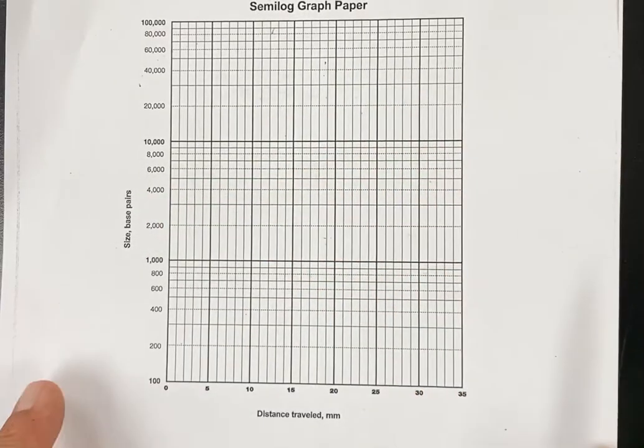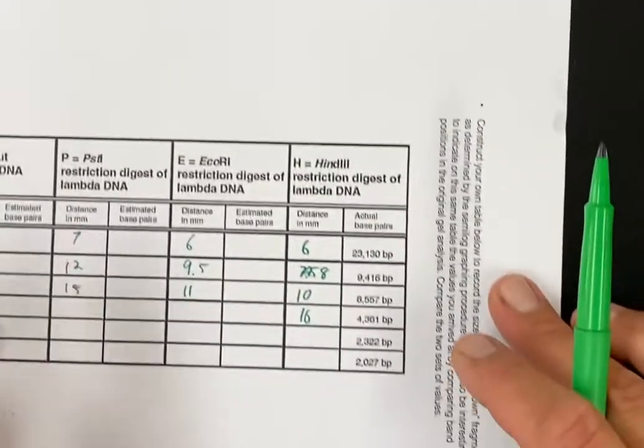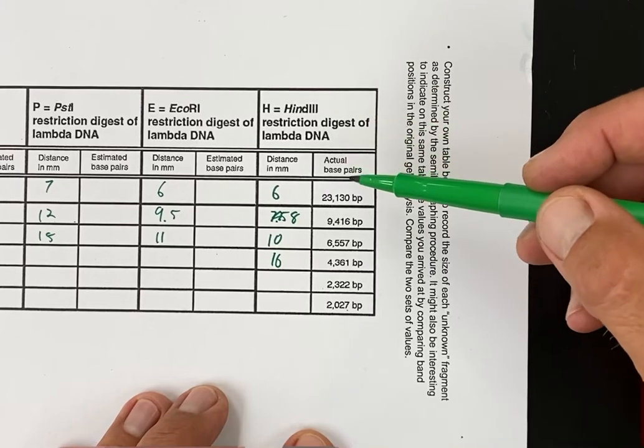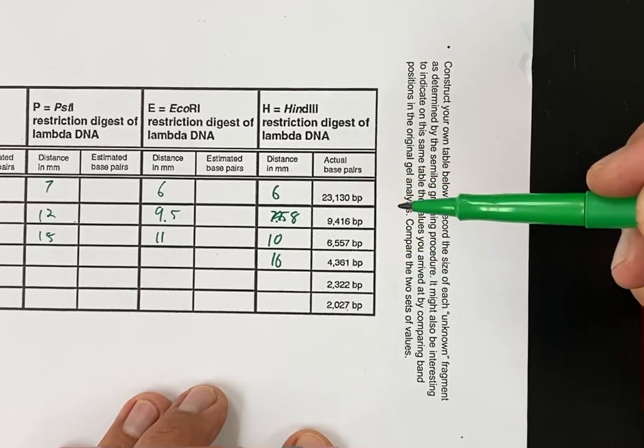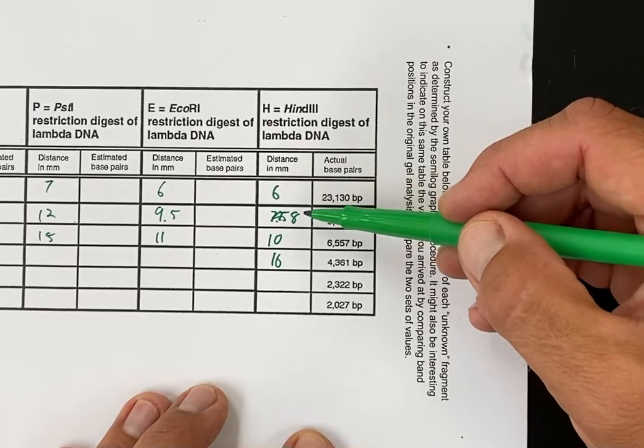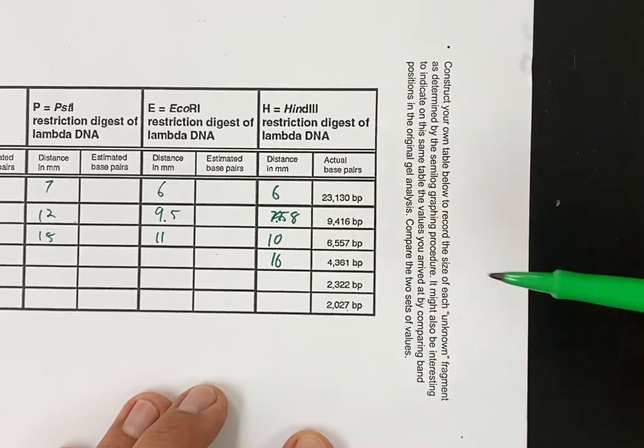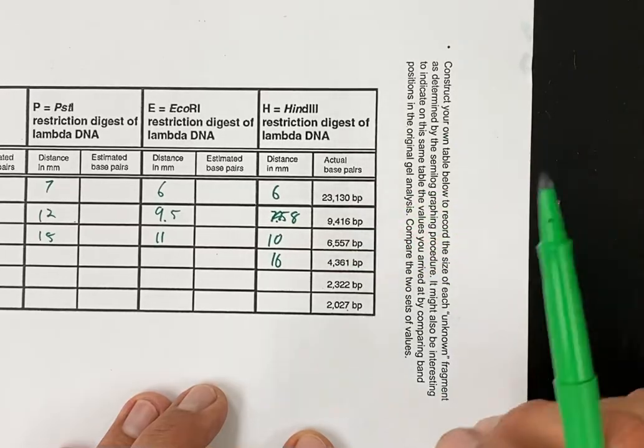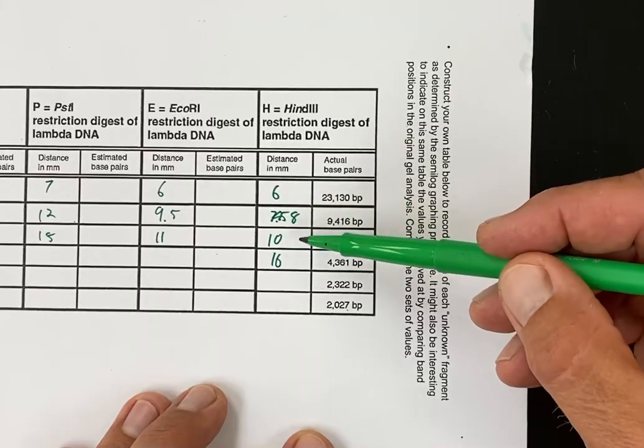Here's what I'm going to do. I'm going to start back here with our HindIII digestion. These are the known sizes of the bands that we see and I measured them out pretty roughly at 6 millimeters, 8 millimeters, 10 millimeters, and 16 millimeters. Now the more precise I am with those measurements, the closer I'm going to get with a better graph, but just for simple purposes I'm going to say 6, 8, 10, and 16.